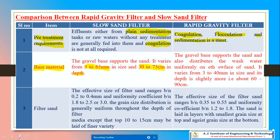For the rapid sand filter, the depth is around 30 to 75 centimeters and the particle size is 3 to 65 mm for the slow sand filter. For the rapid sand filter, the gravel base supports the sand and distributes the wash water uniformly on the surface. The size varies from 3 to 40 mm, and the depth is slightly more than 30 to 90 centimeters. There is no much difference — only variations in depth and size.